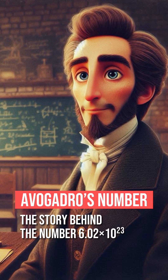As a self-respecting chemistry student, you would surely recognize the term Avogadro's constant. You might even be able to define it as the number of particles in one mole of a substance, or even recite the constant as 6.02 times 10 to the power of 23. But do you know how the number came about?